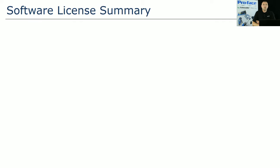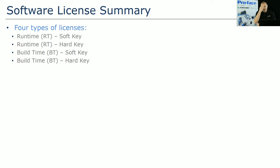For the licenses themselves, we have four different types: a runtime license and a build time license, both available in hard key and soft key versions. The soft key is tied to the software itself — once you install it, you go into the registration utility to get a site code, which is used to generate your license. With a hard key, the same process applies, except you use a USB dongle to generate this code, and the dongle can be moved from installation to installation.